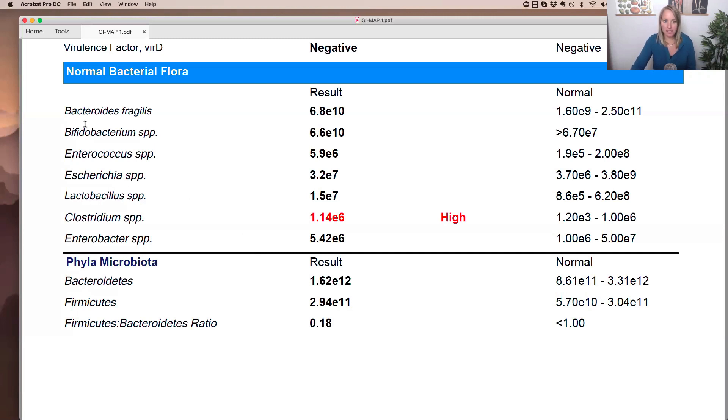So as an example, in hydrogen SIBO, Bacteroides, Lactobacillus, Clostridium, Escherichia, and Enterobacter can all overgrow in SIBO. So if you see some of those elevated, it might sort of tip you off, like maybe this person has a SIBO infection and that's why we're seeing those infections as high.